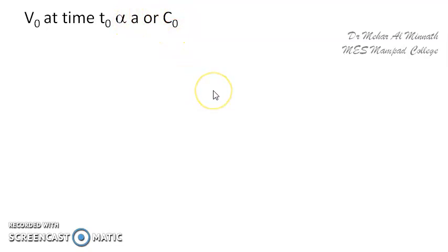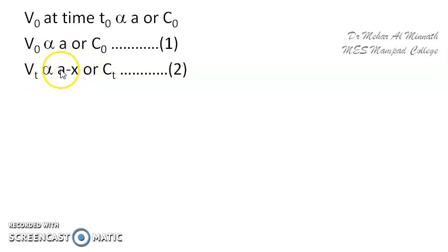We define V₀ as the volume of KMnO₄ used up at time T₀, that is, initially before the reaction starts, and it is proportional to the initial concentration A or C₀. As time passes, if we take the reaction mixture at time T, the volume of KMnO₄ used at time T, denoted V_T, will be proportional to (A − X), meaning the amount of hydrogen peroxide remaining after some time.